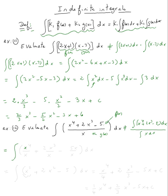This equals the integral of — dividing each term by x — x to the fourth over x, plus 2x cubed over x, minus 5x over x, all dx. Note: I'm changing the last term to 5x so we avoid needing a logarithm, which we haven't covered yet. Simplifying: x to the fourth over x = x cubed, 2x cubed over x = 2x squared, and 5x over x = 5. So we integrate x cubed plus 2x squared minus 5 dx.